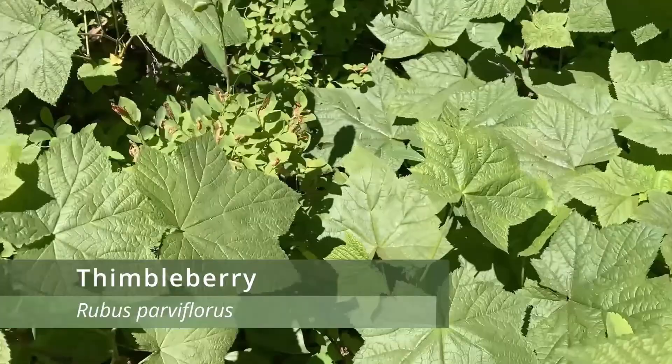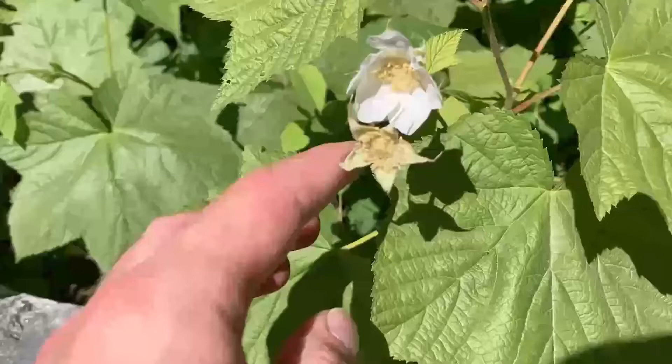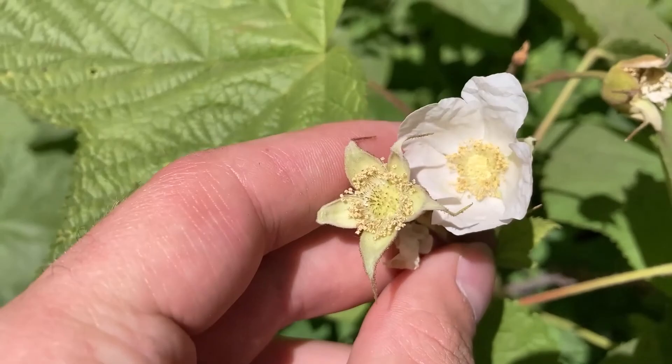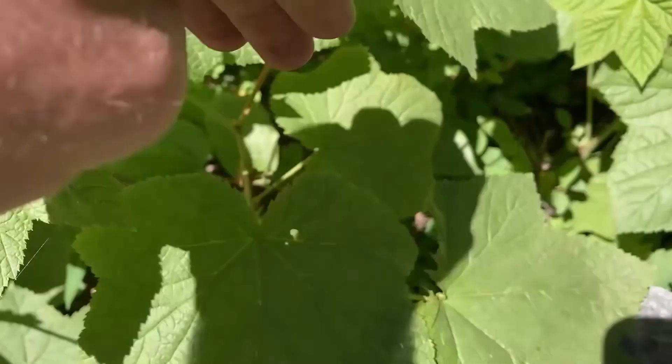Here we have Thimbleberry, which is our last deciduous shrub from the Grand Tetons. The leaves of this species look very similar to maple leaves and are arranged in an alternating pattern. This spiny shrub is a relative of raspberries and blackberries, and it will form dense thickets of itself. The fruits of Thimbleberry are large, red, and edible, resembling a much larger raspberry.